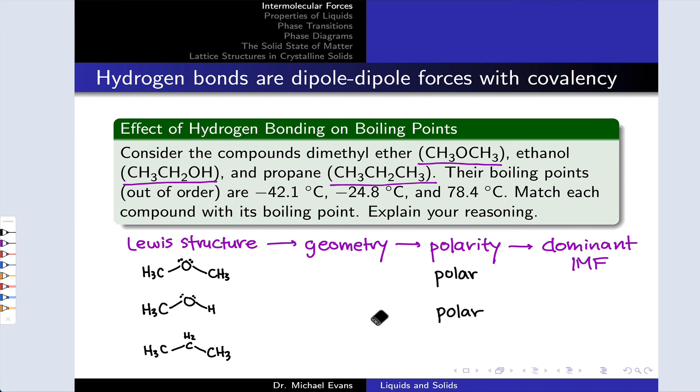So the geometries, in all cases, we don't actually need to list. We can just go straight to the polarities, and we see that the dimethyl ether and the methanol or ethanol would be polar. The propane is essentially nonpolar, with only nonpolar covalent bonds in its structure. And so the dominant IMFs, then, are dipole-dipole interactions here, London dispersion forces here, but hydrogen bonding interactions in the ethanol. Hydrogen bonding because we have the OH group in there. So the oxygen of one alcohol molecule can interact with the H of another alcohol molecule, and that is a hydrogen bonding interaction.